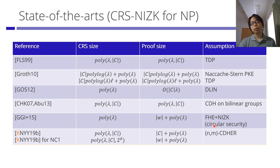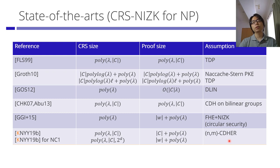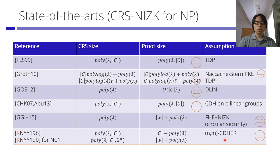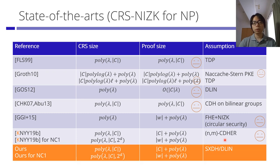However, when we look at those assumptions, one requires FHE, which we only know how to build from lattices, or we require a non-static assumption called the CDHER assumption, which is basically a Diffie-Hellman type assumption that is non-static. We want to get the best of both worlds — compact proof size of C plus poly-lambda or witness size plus poly-lambda — while the assumption is standard SXDH or DLIN.